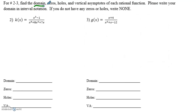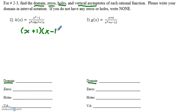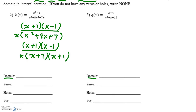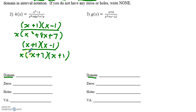For numbers two and three, we would like to find the domain, zeros, holes, and vertical asymptotes of each function. For number two, I'm very tempted to factor first. My suggestion: let's factor, but before we cross anything out, let's find the domain. The numerator factors to x plus one times x minus one. In the denominator, I can take a GCF of x, leaving x squared plus 8x plus 7, which factors further into x plus seven and x plus one. So the denominator is x times x plus seven times x plus one.